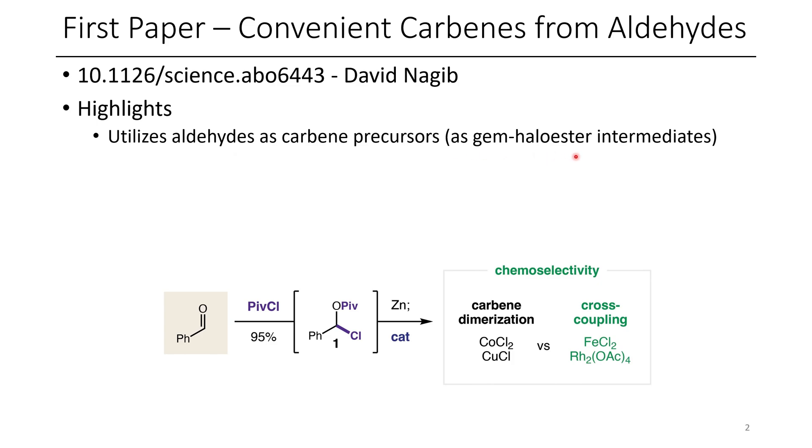Normally, when people are generating carbenes, it'll be done via the Simmons-Smith, the Korichikovsky, or through diazo intermediates.